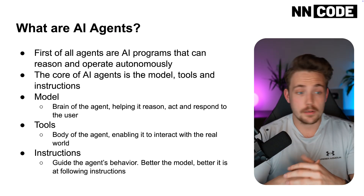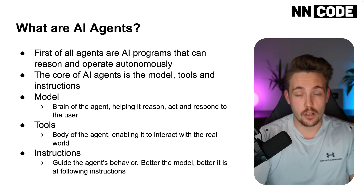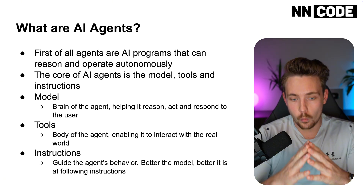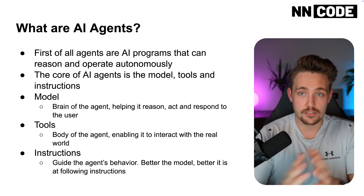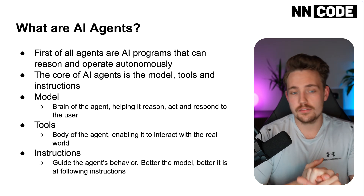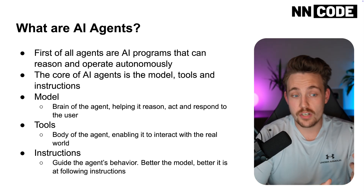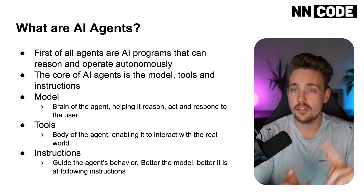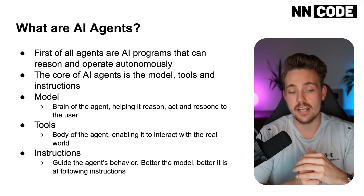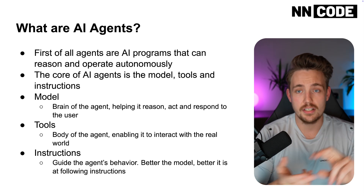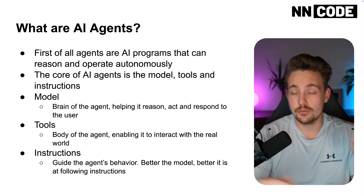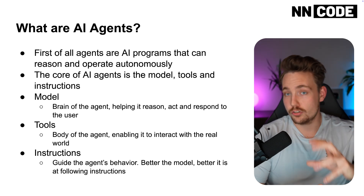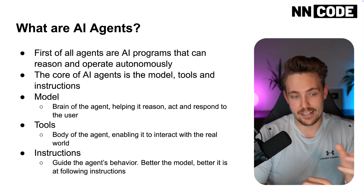We hear about AI agents everywhere, so what are AI agents? A lot of times when we hear about it, it's actually just an LLM call, but we need to know what actual AI agents are. AI agents are basically just AI programs that can reason and also operate autonomously. They can take decisions based on the input, the query that you give to the agent. They have memory, they have access to different tools, and they can operate autonomously based on the tools and the user's intent.